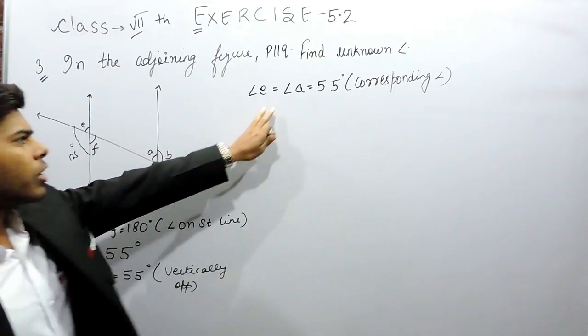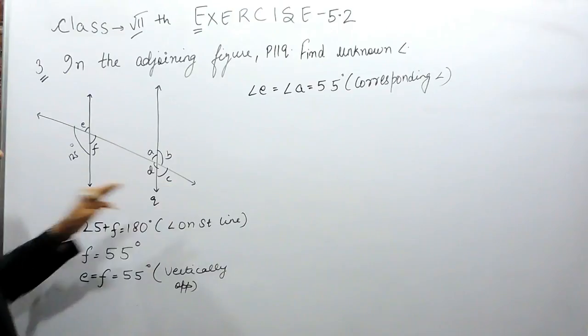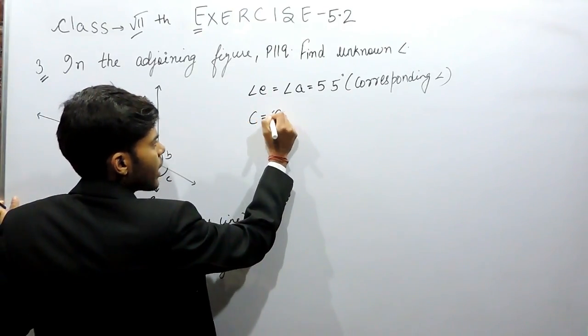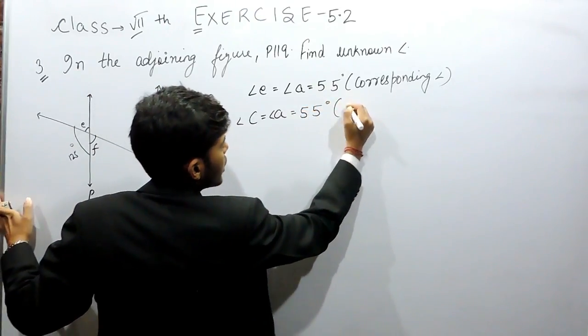After that, now we know A to be 55 degrees. If A is 55 degrees, then C equals 55 degrees, vertically opposite.